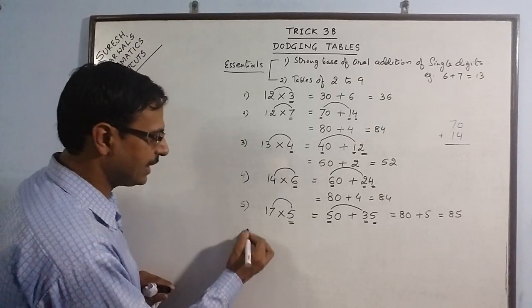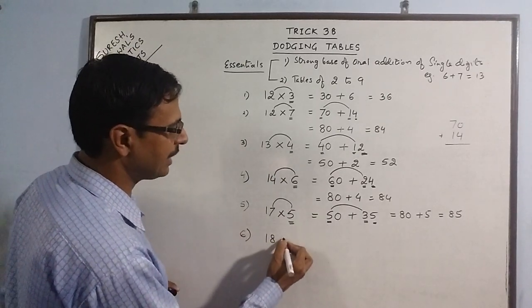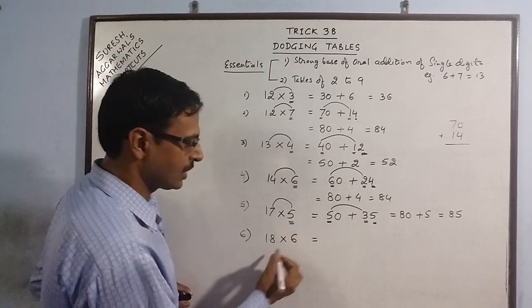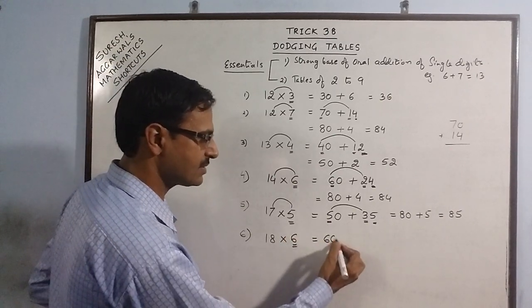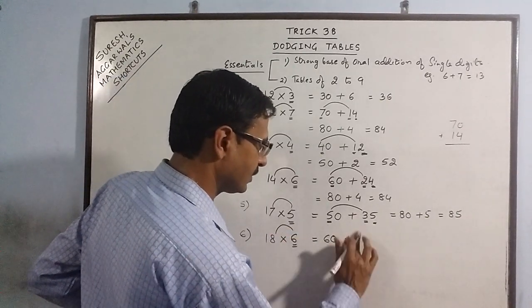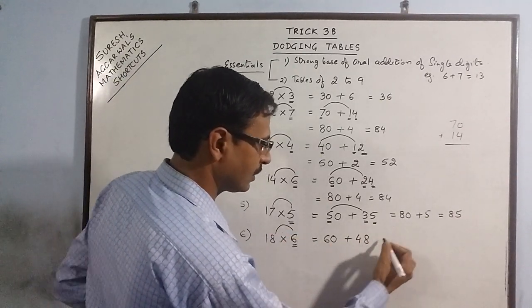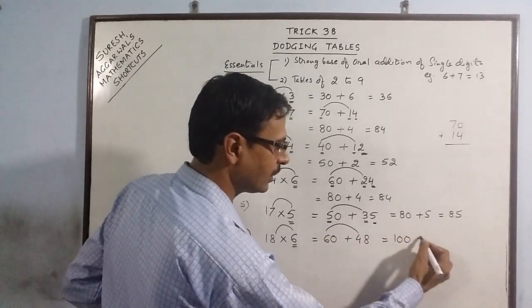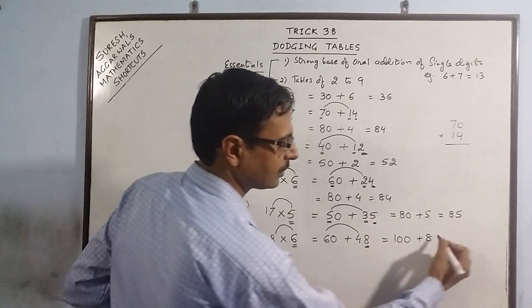Let's take one more example: 18 to be multiplied by 6. Here it is 6 supplemented by 0, 6 eights are 48. Now 6 plus 4 is 10, put a 0 and add 8, giving 108.